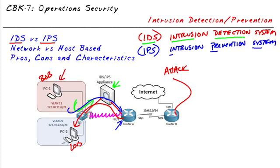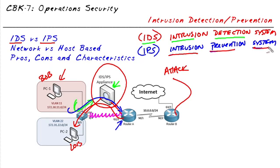Because this appliance is now inline, it's considered an intrusion prevention system. Why? Because if it does see malicious traffic, it can go ahead and stop that traffic right in its tracks, thus preventing that attack from moving any further in the network.